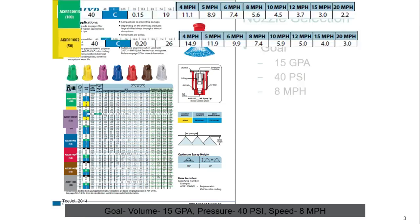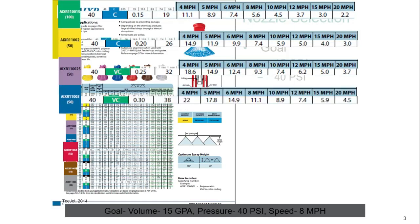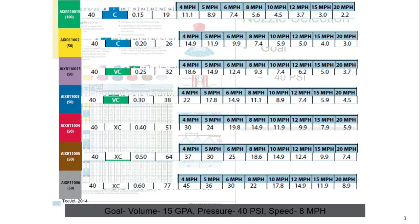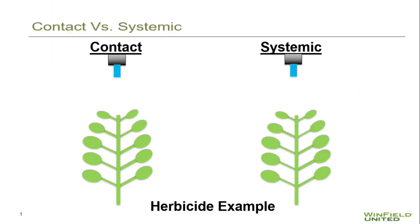If we're going for 40 psi, we'd follow this 8 mile an hour line down until we found 15 gallons per acre, and notice that we need a 110.04 nozzle.